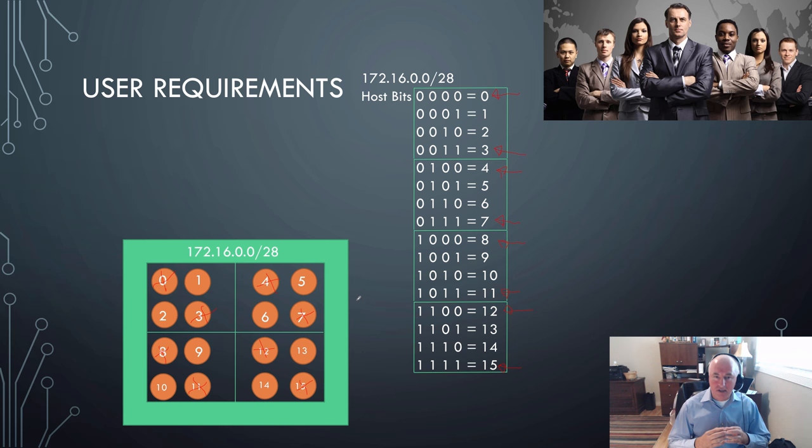But you can see there's a cost to subnetting where before I had 16 M&Ms and I could use 14 of them because I wouldn't be able to use the first and last for the same reasons. The first one identified my network and the last one identified the broadcast for my network.